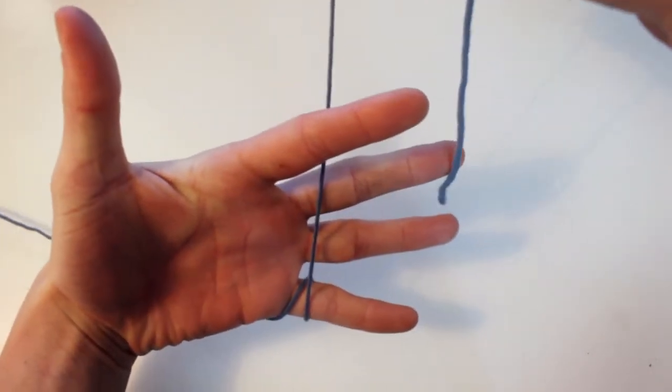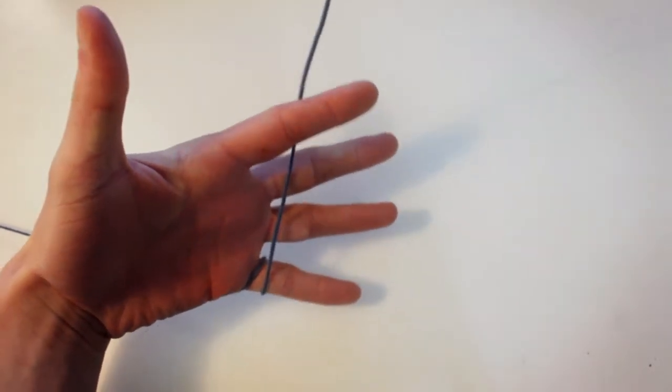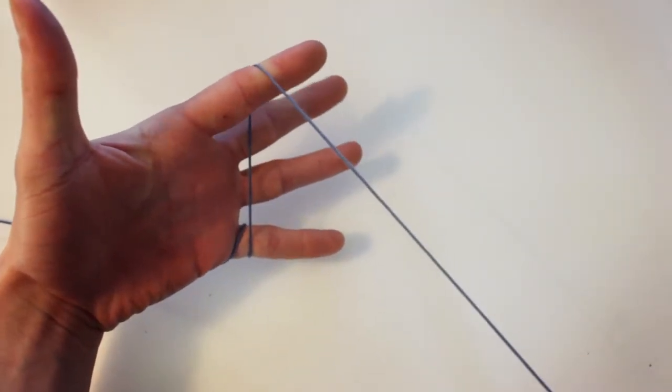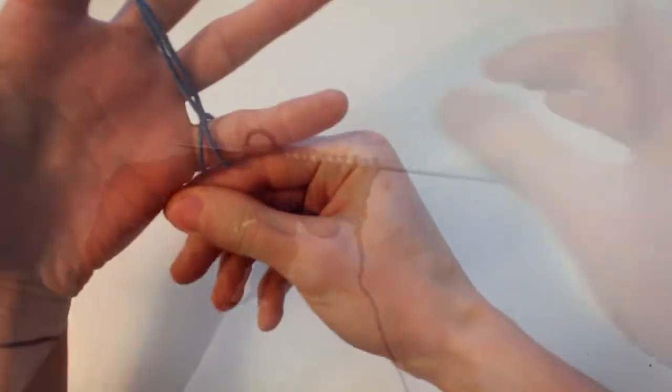That still enables the yarn to flow but it adds some resistance because of that wrap, so it doesn't move quite as freely as if I just ran it over my pinky finger.